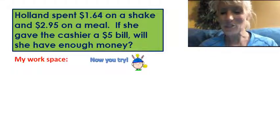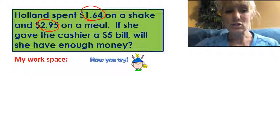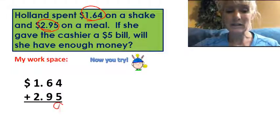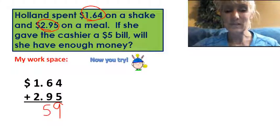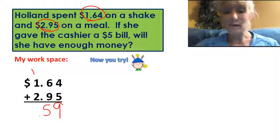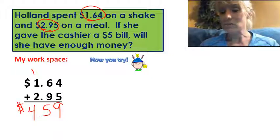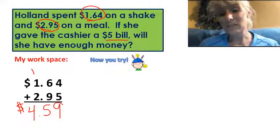Okay, I hope that you tried it out for yourself. Let's see if you did all the things I'm going to do. Did you notice that Holland spent a dollar sixty-four and two dollars and ninety-five cents? So you're going to need to add that up. Four plus five is nine. Six plus nine is fifteen. Drop that decimal. Add your one at the top. Two plus one is three and one more makes four. So Holland spent four dollars and fifty-nine cents, but she had five dollars — so would she have enough money? Yes she will.